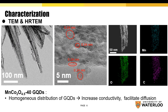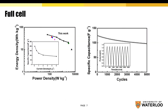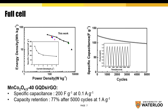From the HRTEM, GQDs are observed to be homogeneously distributed, increasing the conductivity and facilitating diffusion. The full cell assembled using the nano-needle shape materials with RGO achieves high capacitance and long cycle life.